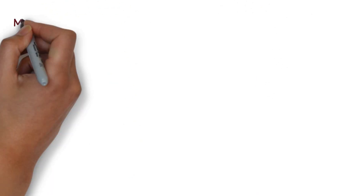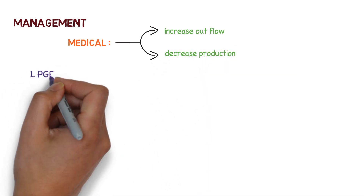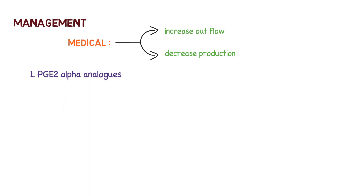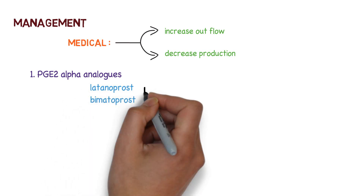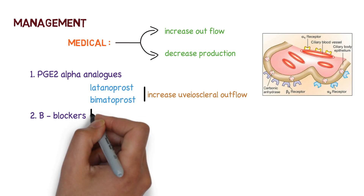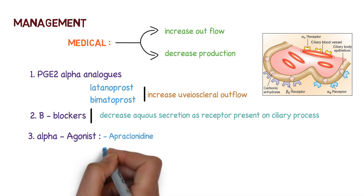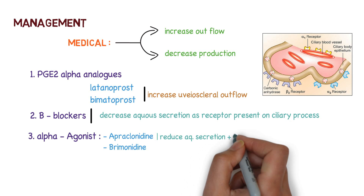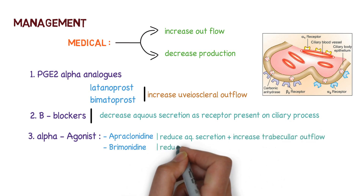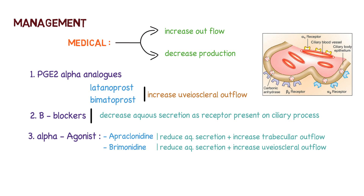Management is divided into medical and surgical. In medical management, we can either increase the outflow or decrease the production. PGE2-alpha analogues such as latanoprost and bimatoprost increase uveoscleral outflow. Beta blockers decrease aqueous secretion, as the receptors are present on the ciliary process. Alpha agonists include apraclonidine and brimonidine: apraclonidine reduces aqueous secretion and increases trabecular outflow, while brimonidine reduces aqueous secretion and increases uveoscleral outflow.